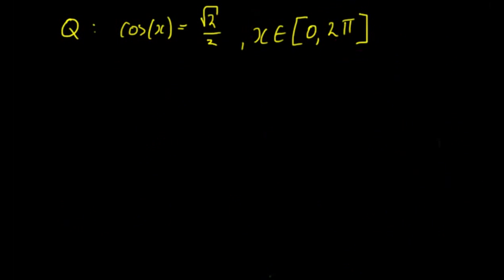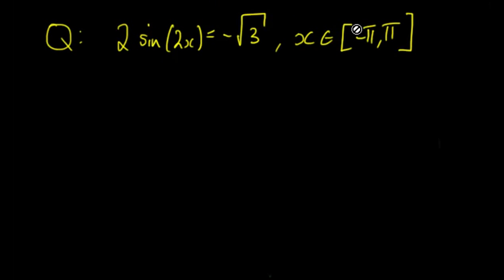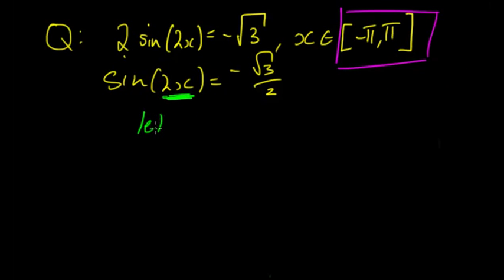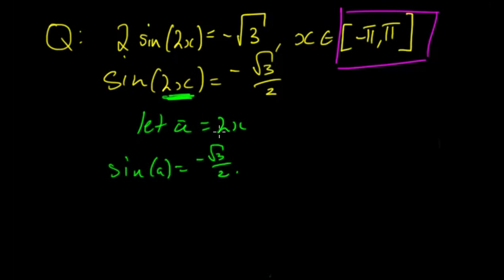Another question: 2sin(2x) = −√3, with x between −π and π. First, rearrange to get sine alone: sin(2x) = −√3/2. The difference from before is that we now have 2x instead of x. So let a = 2x, giving sin(a) = −√3/2. We solve for a normally, then substitute back a = 2x at the end.